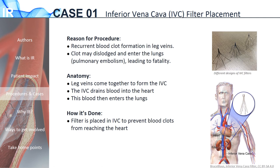The first case we'll discuss is the placement of IVC filters, which are used in patients who have recurrent blood clot formation in their legs. These clots may get dislodged and enter the lungs, known as pulmonary embolism, which could lead to death. In terms of the anatomy, the veins in the legs come together to form the IVC, a large vein that drains blood directly into the heart, which then directly enters the lungs. An IVC filter is a filter placed in the IVC that acts as a sieve for blood moving up towards the heart. A blood clot that gets dislodged from the legs is unable to cross the filter and therefore cannot get into the heart. These filters can often measure around 30 millimeters, but are placed through incisions in the skin that are only 5 millimeters large and then open in the IVC like an umbrella.